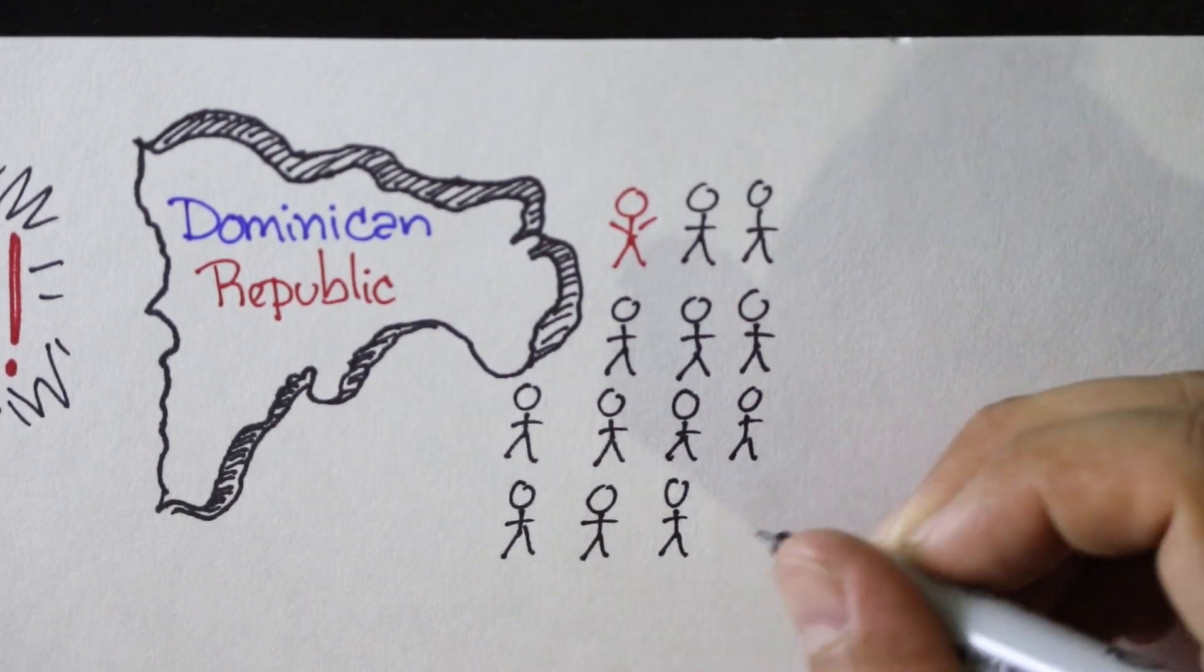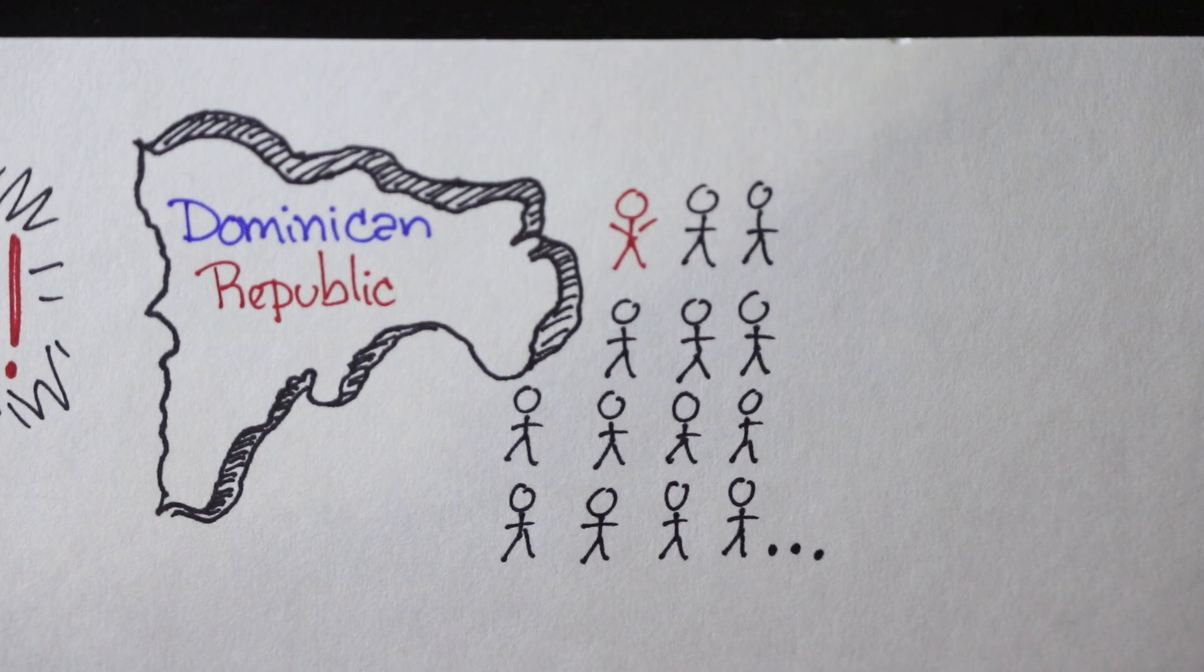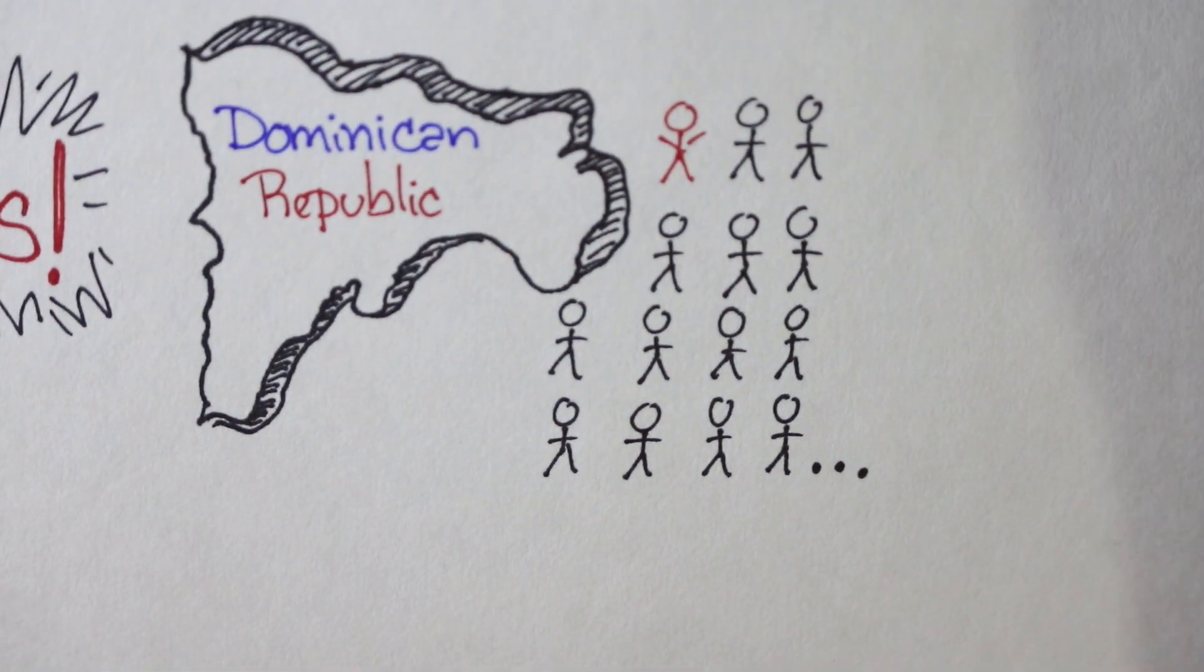they begin to develop masculine features such as facial hair, deepening of their voice, and a penis.